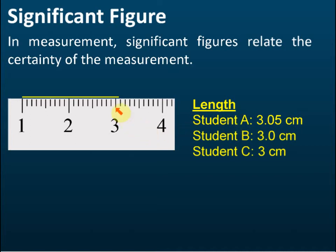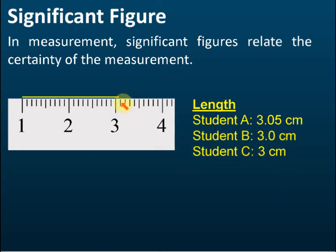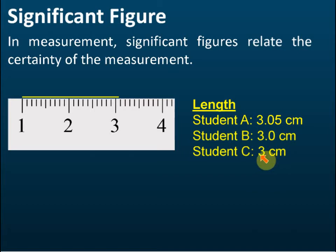Student A says it's at 3.1 and it's in the middle, so he gives his answer as 3.05, which is very accurate. Student B rounds it up — even though it's 3-point-something, he rounds it to 3.0. And Student C says it's around 3, so he records it as 3 cm. So now we have three answers with different significant figures: 3.05 has three significant figures, 3.0 has two significant figures, and 3 has one significant figure.